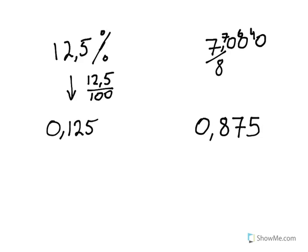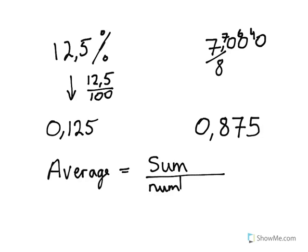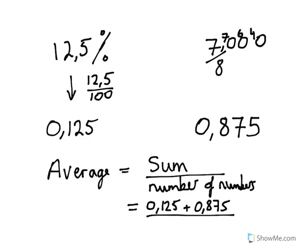What's the way to find the average of two numbers? The average is the sum of those numbers divided by the number of numbers. The sum of our numbers is 0.125 plus 0.875, all divided by how many numbers we have - which is 2.